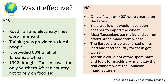Was this an effective strategy? On one hand, it did have some positive effects: it led to infrastructure improvements such as roads, rail, and electricity lines, and training was provided to local people. It provided 60% of all of Tanzania's wheat. In the 1992 drought, Tanzania was the only southern African country not to rely on food aid, so its physical food security had clearly improved.